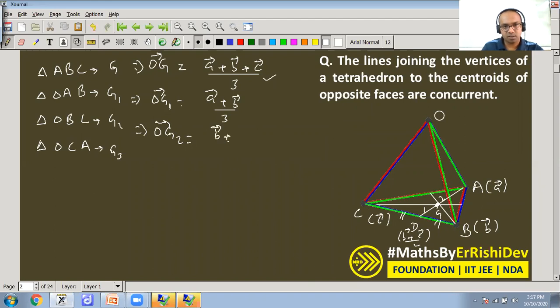And then I move to the fourth centroid, the fourth triangle OG3. That is OCA. So what will I have to do? C and A, the position vectors which I can write: a plus c upon 3. So this is how you can write G1, G2, G3 and G.